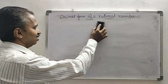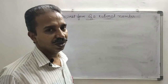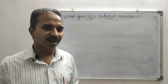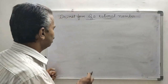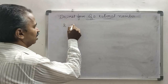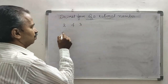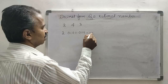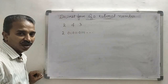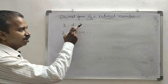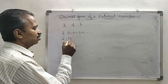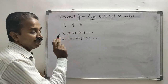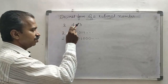If the decimal form of a number is non-terminating and non-recurring, it is an irrational number. Now, if you want to find some irrational numbers between 2 and 3: 2.010111111111... is non-terminating and non-recurring, so it is an irrational number greater than 2 and less than 3. Similarly, 2.101011111111... is also non-terminating and non-recurring, so it is an irrational number between 2 and 3.